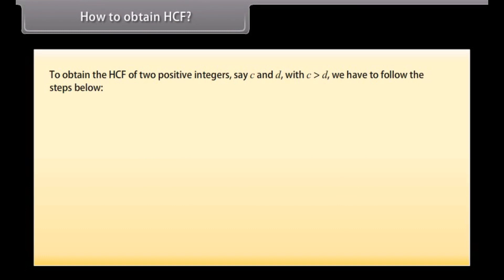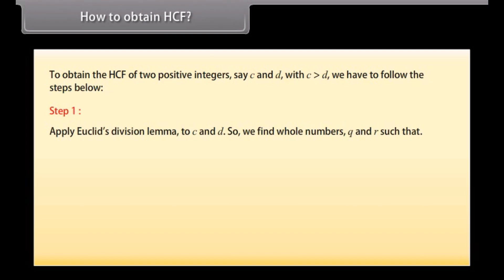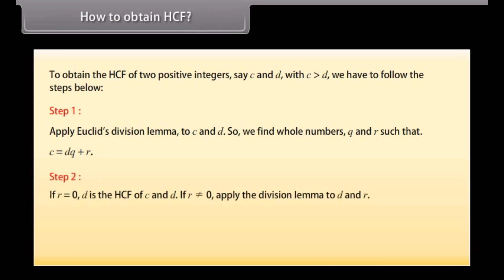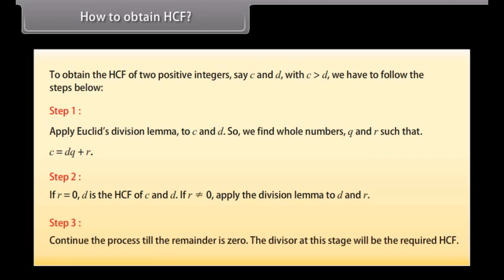How to obtain HCF? To obtain the HCF of two positive integers, say C and D, with C greater than D, follow these steps. Step 1: Apply Euclid's division lemma to C and D to find whole numbers Q and R such that C equals DQ plus R. Step 2: If R equals 0, then D is the HCF. If R is not equal to 0, apply the division lemma to D and R. Step 3: Continue the process till the remainder is 0. The divisor at this stage will be the required HCF.